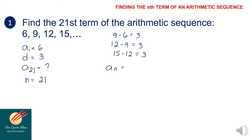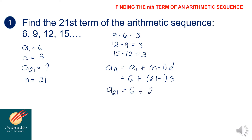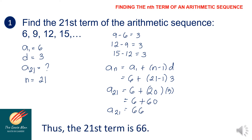A sub n equals a sub 1 plus (n minus 1) times d. Substituting: a sub 21 equals 6 plus (21 minus 1) times 3, which gives 6 plus 20 times 3, equals 6 plus 60. Therefore, a sub 21 is equal to 66 — the 21st term is 66.